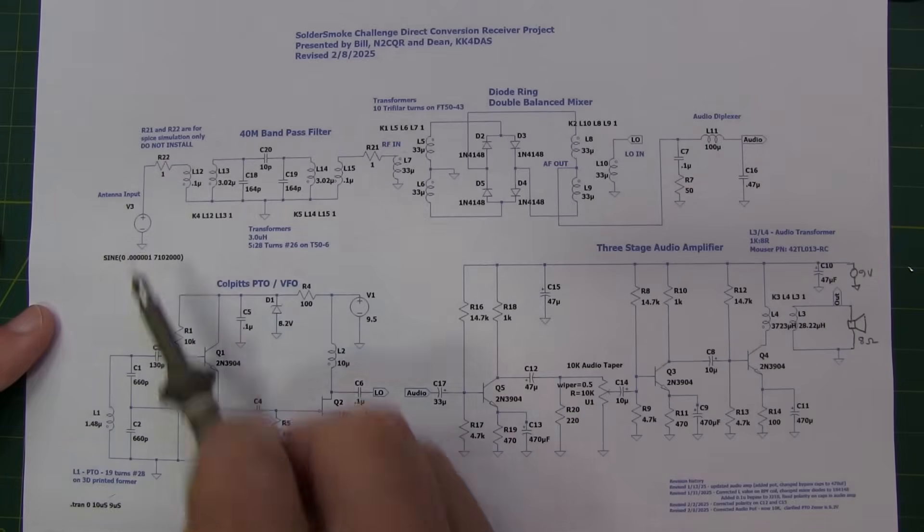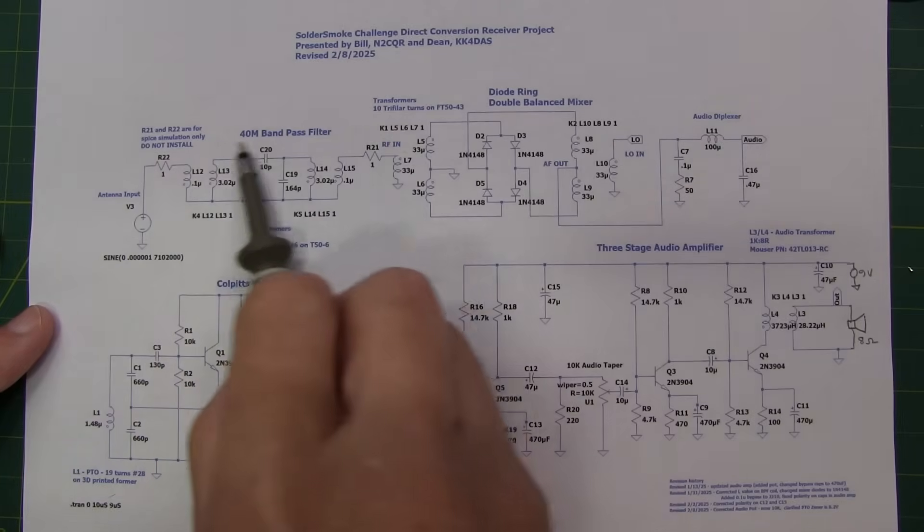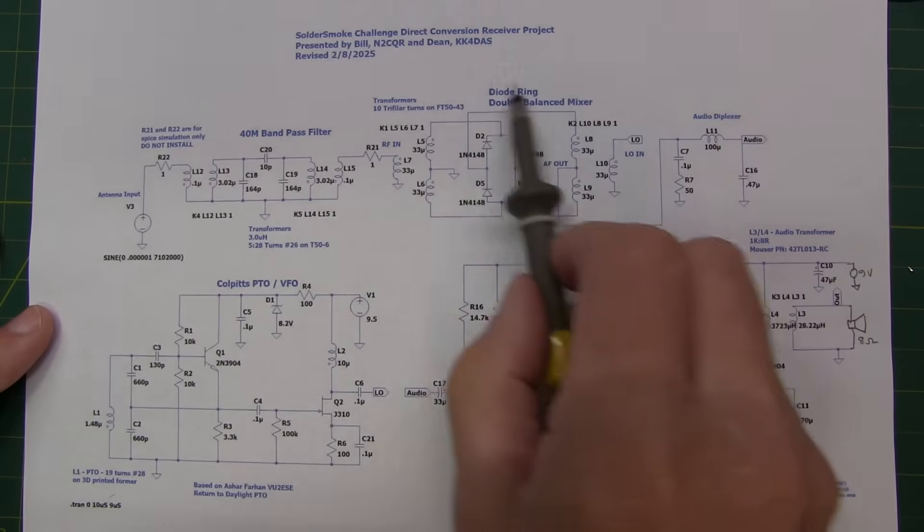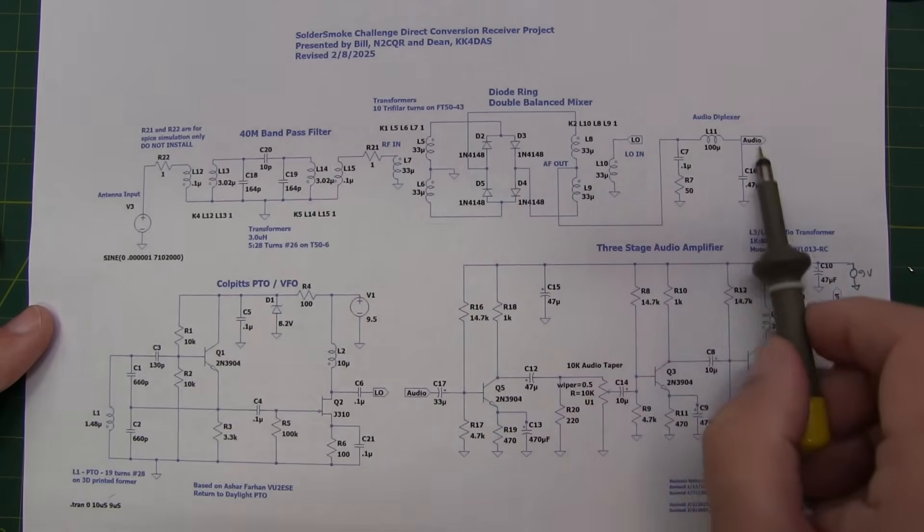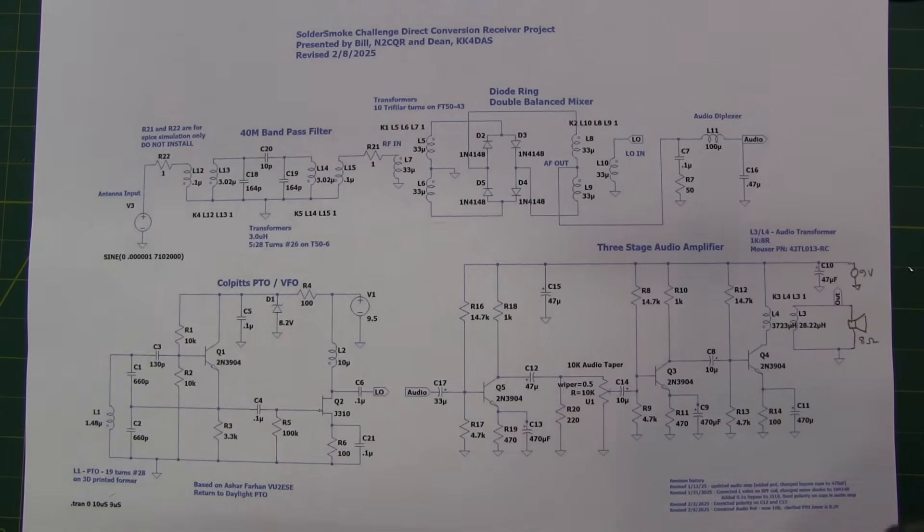Let's take a brief look at the schematics. So here's the overall schematic, antenna input here. Here's our 40-meter bandpass filter. This is the diode ring double-balanced mixer and the audio diplexer. The Colpitts oscillator here is our variable frequency oscillator, and this is our three-stage all-transistor audio amplifier. I'm not going to go into great analysis detail of each of these circuits.